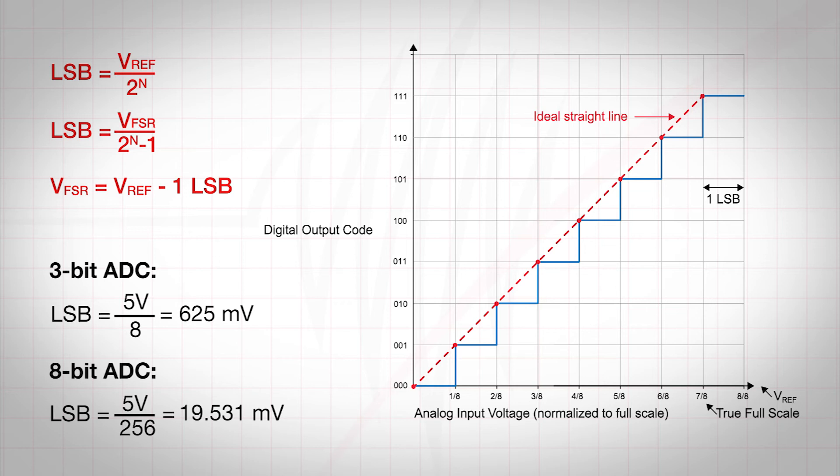From the ADC transfer function, we can see the inherent absolute error is going to be 1 LSB. The smaller the LSB, the smaller this error will be, and the closer we get to the ideal straight line.